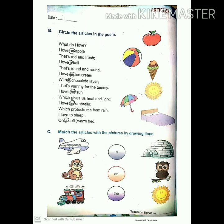Now we'll begin with B: circle the articles in the poem. 'What do I love? I love an apple' — circle 'an' — 'that's red and fresh. I love a ball' — circle 'a' — 'that's round and round. I love an ice cream' — circle 'an' — 'with a chocolate layer' — circle 'a'.